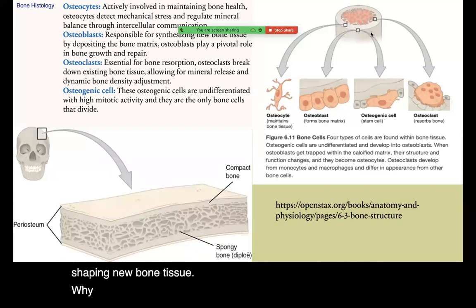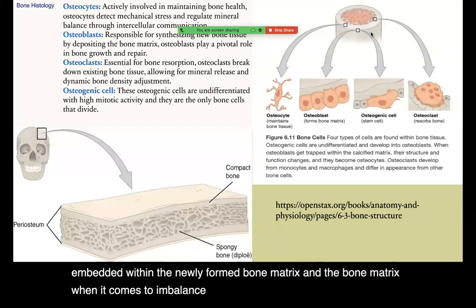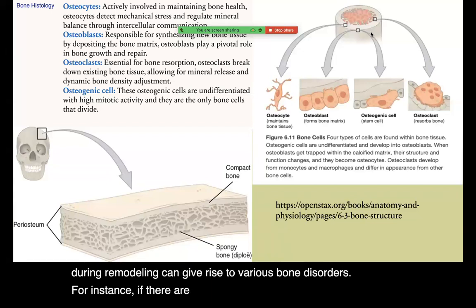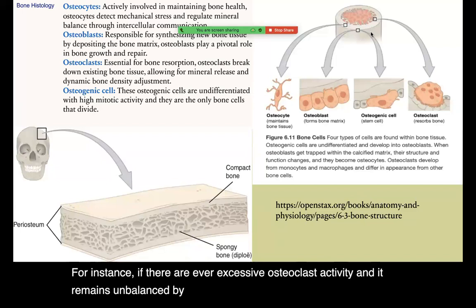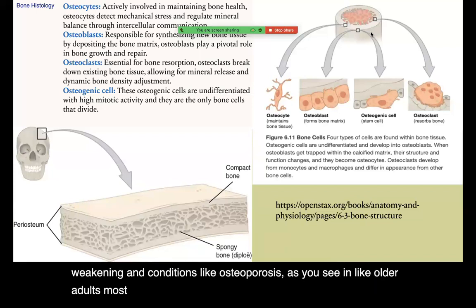When it comes to formation, osteoblasts deposit collagen and minerals, shaping new bone tissue. As osteoblasts mature into osteocytes, they become embedded within the newly formed bone matrix. An imbalance in remodeling among bone cells can give rise to various bone disorders — for instance, if there is excessive osteoclast activity not balanced by osteoblasts, this may lead to bone weakening and conditions like osteoporosis, as seen most commonly in older adults, though it can occur at any age.